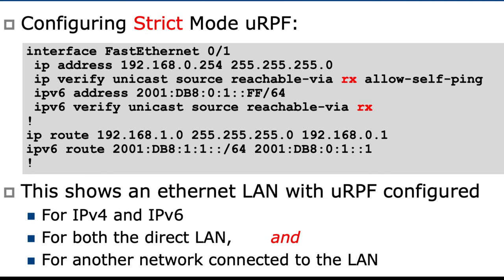The LAN in this example is configured with an IPv4 address and an IPv6 address. We have configured 'ip verify unicast source reachable-via rx', which means the receive interface, for both IPv4 and IPv6. We have also configured the extra option 'allow-self-ping' for IPv4. We will now look at what these features of the configuration mean.